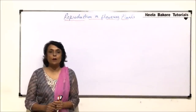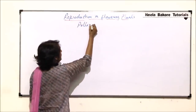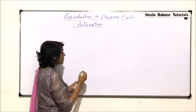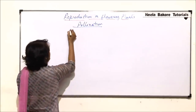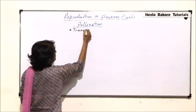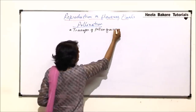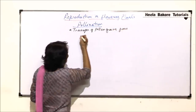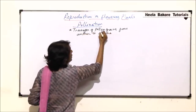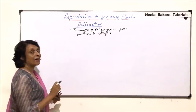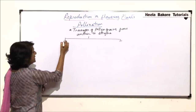In this video we will talk about pollination and its types. The process of pollination means transfer of pollen grains from anther to stigma. This process is known as pollination.